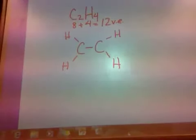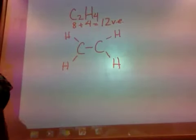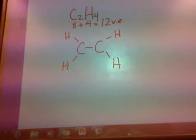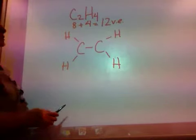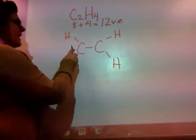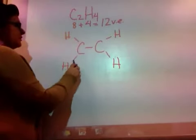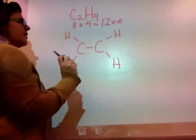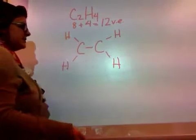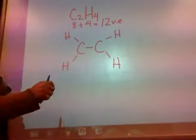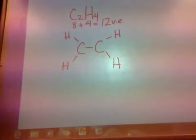Here's our structural formula. But our goal is to get the Lewis structure. So let's check to see how many electrons we have right now — one through ten. So right now I have ten valence electrons, which means I need to show two more.